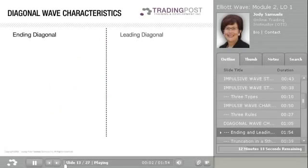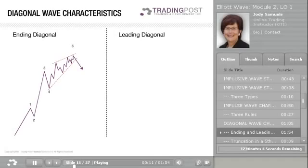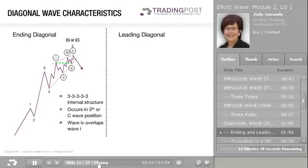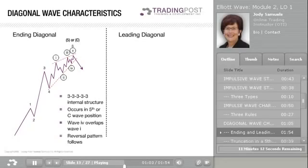Ending diagonals and leading diagonals have different characteristics and internal structures. Ending diagonals are more common than leading diagonals. The internal structure of an ending diagonal is comprised of all three-wave or corrective patterns, meaning all of the waves of the 5-wave sequence subdivide into three waves. Ending diagonals occur in the 5th wave position or in the C position in the ABC correction. Wave 4 overlaps Wave 1. Ending diagonals typically occur when the market is about to change direction, and when in the Wave 5 position, a major reversal is about to take place. According to Elliott, it often occurs when the preceding move has gone too far too fast. In classical technical analysis, an ending diagonal is known as a rising wedge.